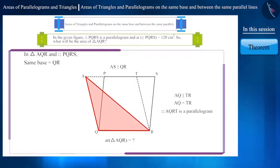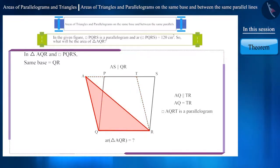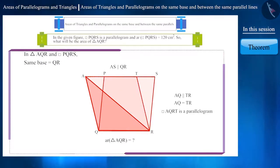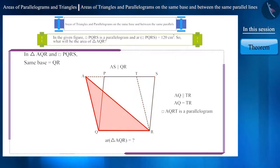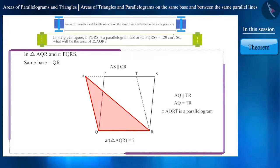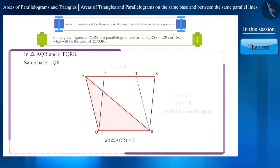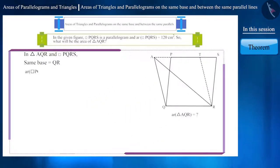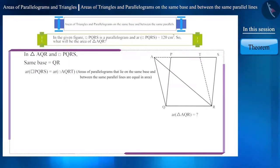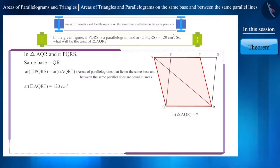Let's talk about the area of parallelogram AQRT. We know that quadrilateral AQRT and quadrilateral PQRS are both parallelograms that lie on the same base QR and between the same parallel lines AS and QR. Therefore, their areas will also be equal — that is, the area of quadrilateral AQRT will also be 120 cm².